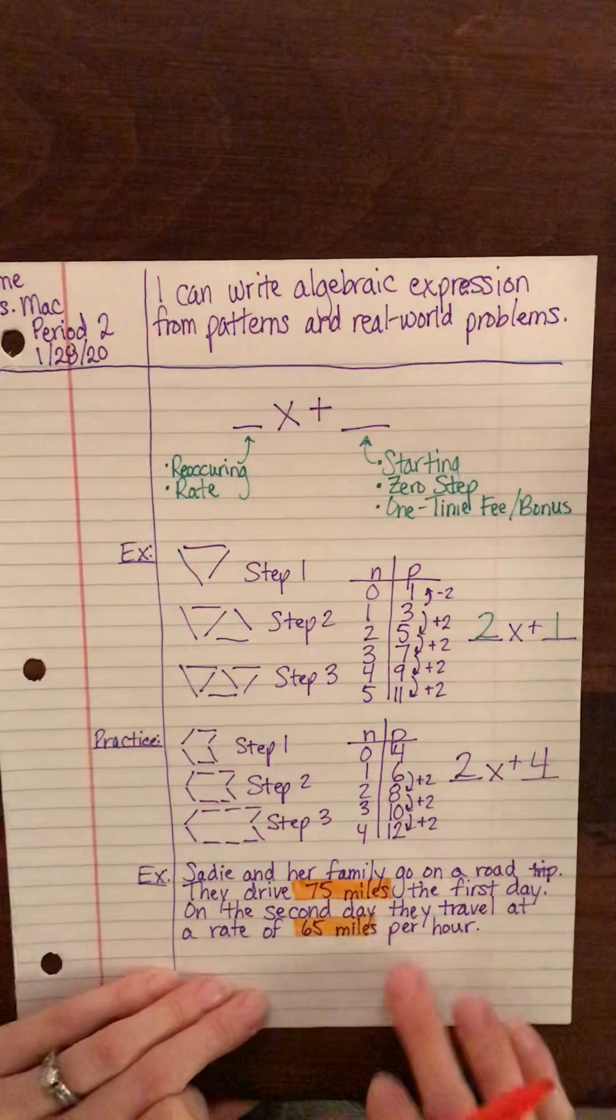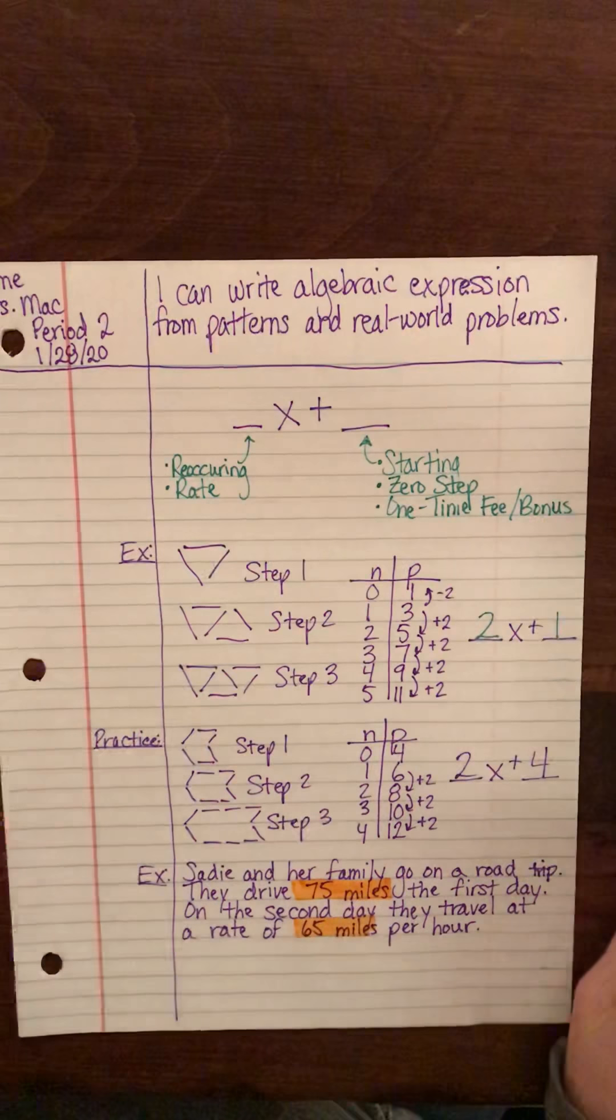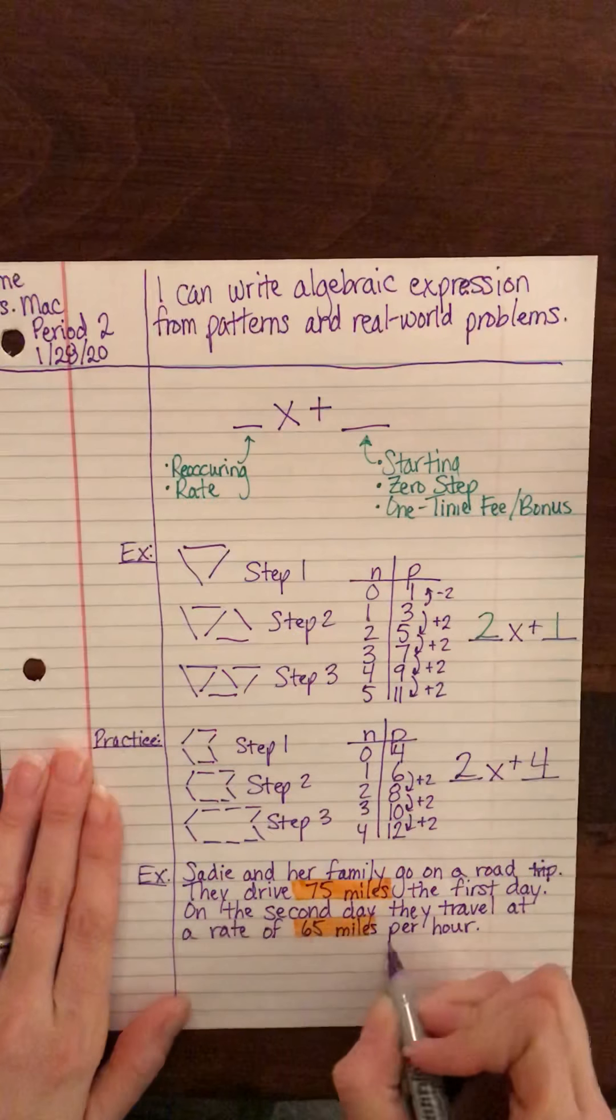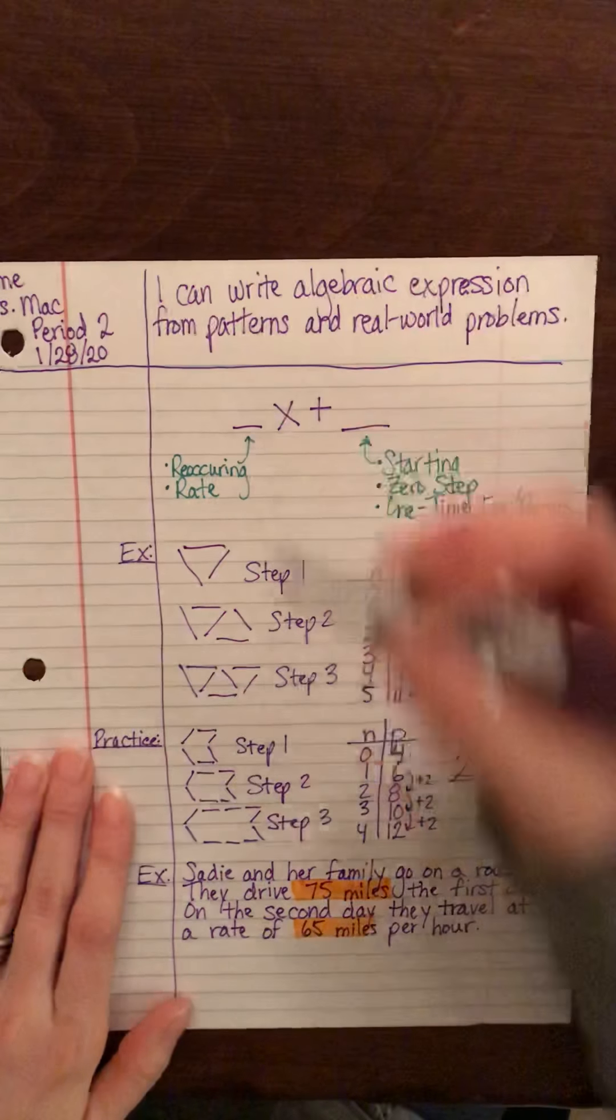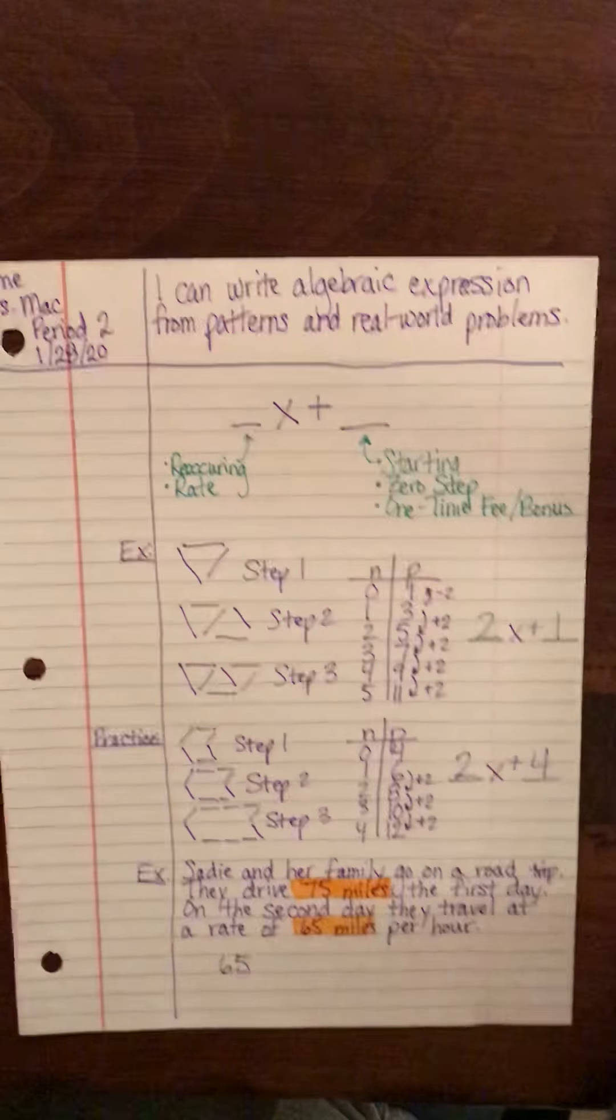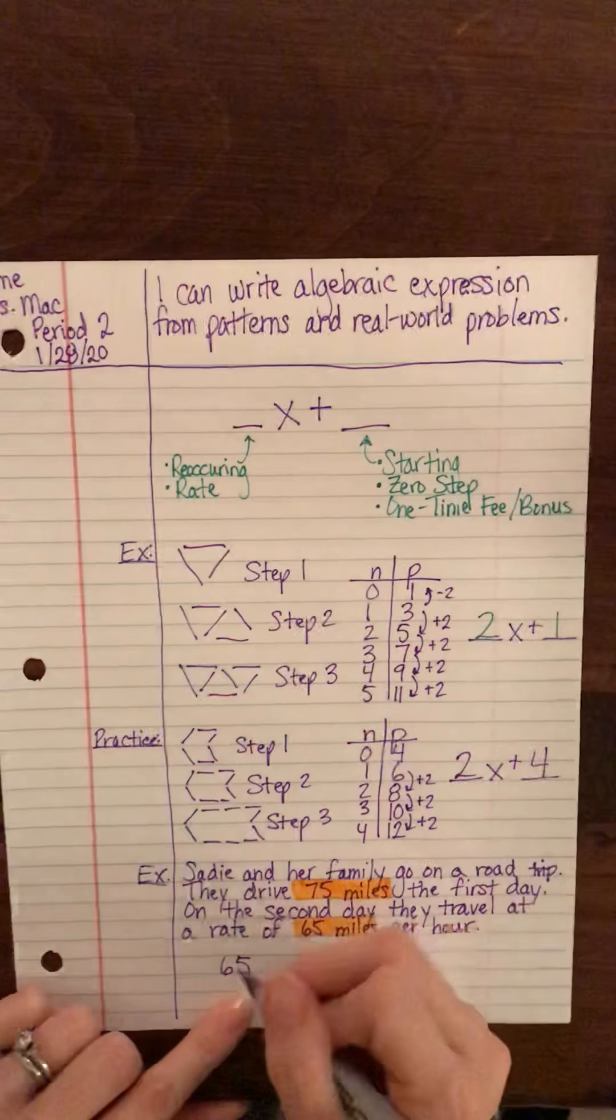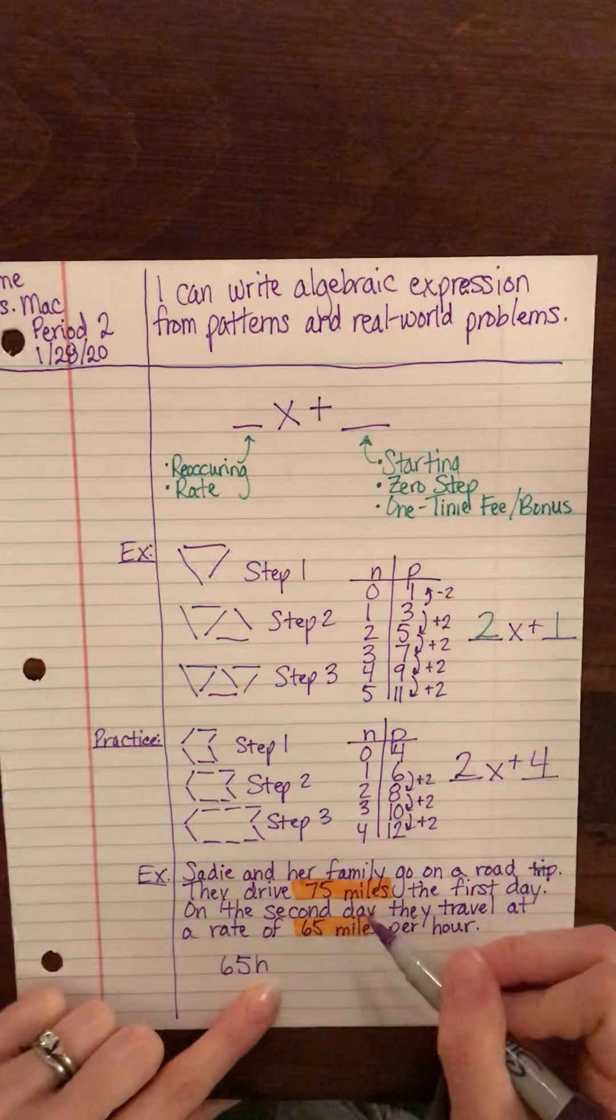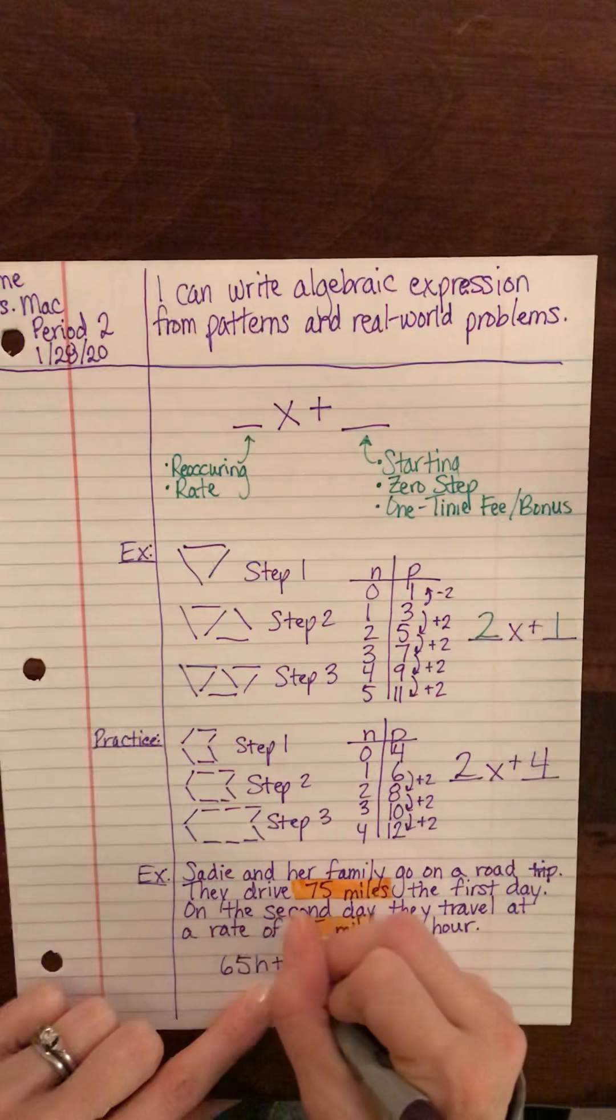So when we write our expression, this is the rate, so this is going to go in front of our variable, so it's going to be 65. Instead of using an x this time, I'm going to use an h for hours. And then we know that they've already driven 75 miles on their road trip the day before.